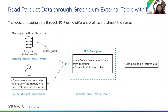For the read logic, the user provides the location of the Parquet files in the file system, creates a readable external table with a Parquet profile, and selects data from that table. PXF and Greenplum will then convert Parquet data into Greenplum table tuples based on the Parquet schema in the Parquet file, and display the query results to the user in the form of a Postgres table.